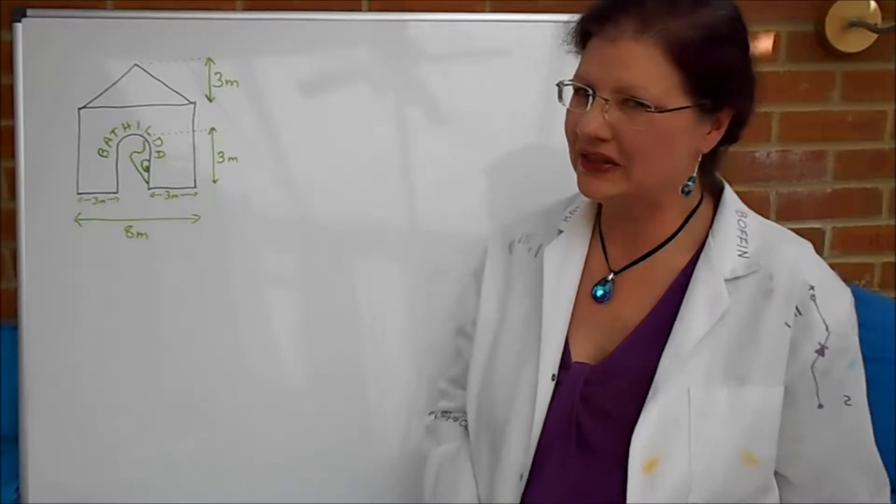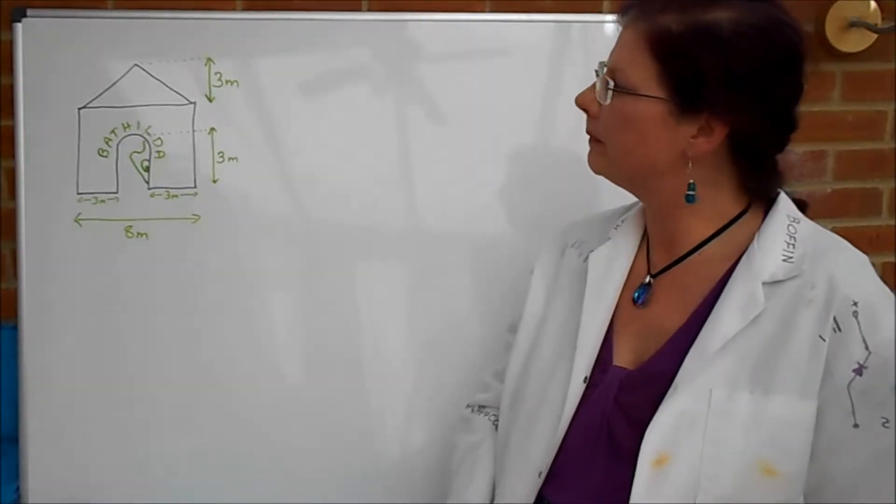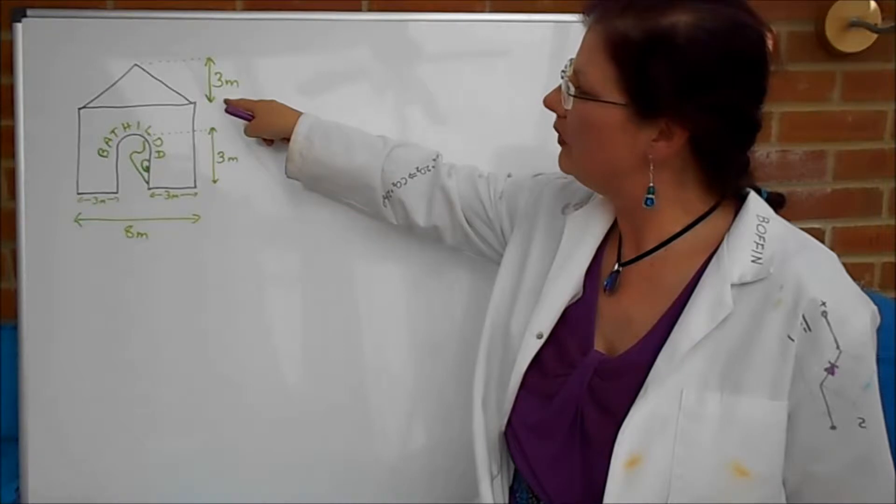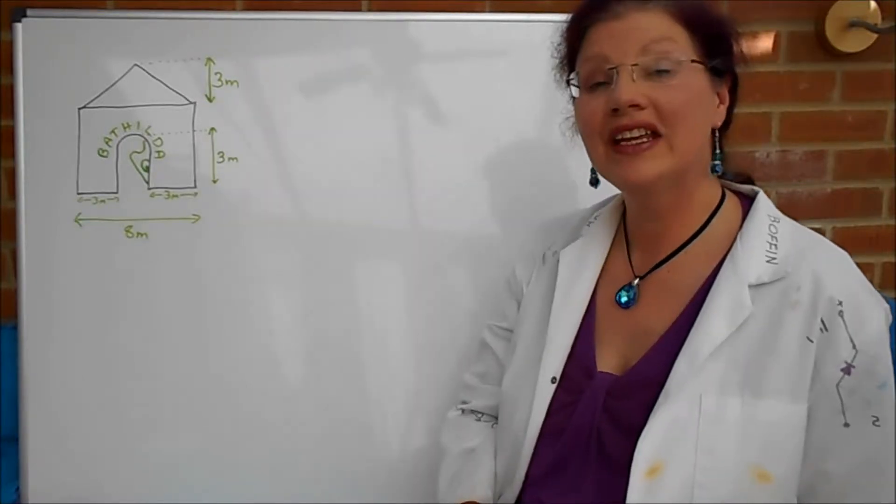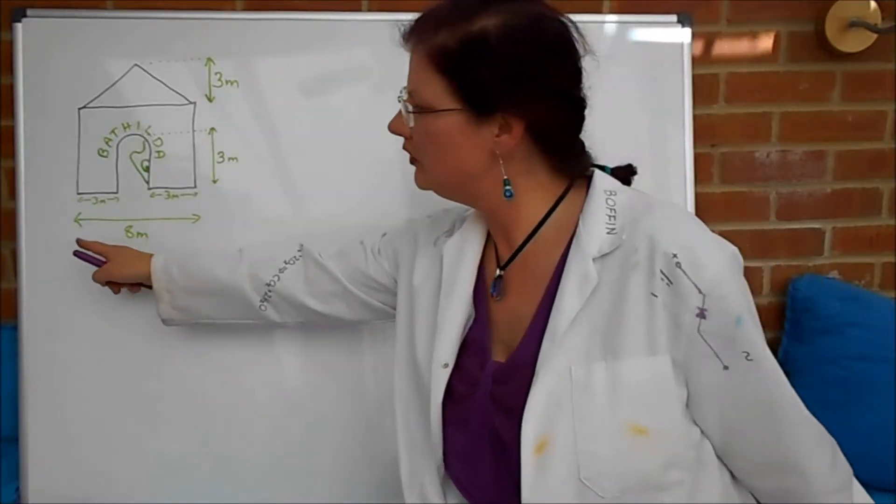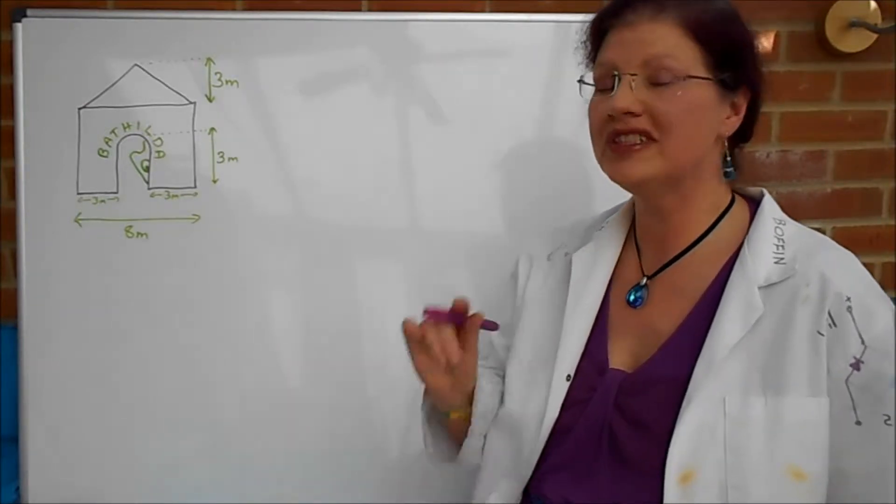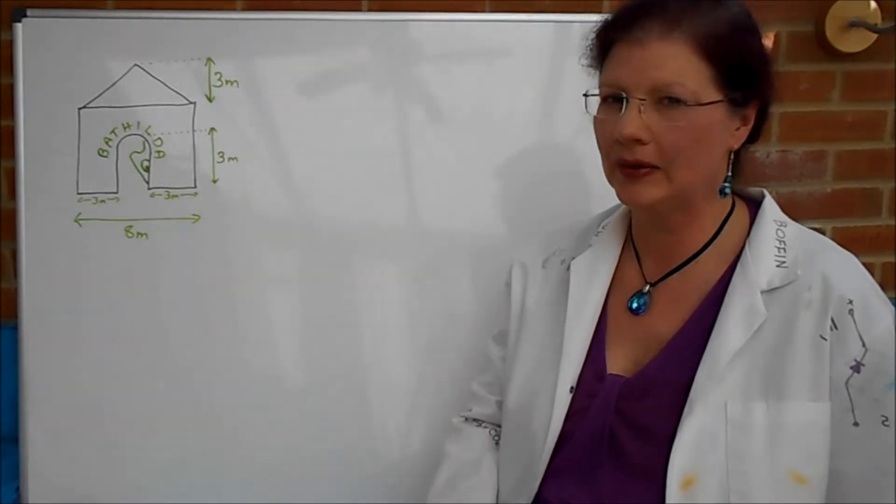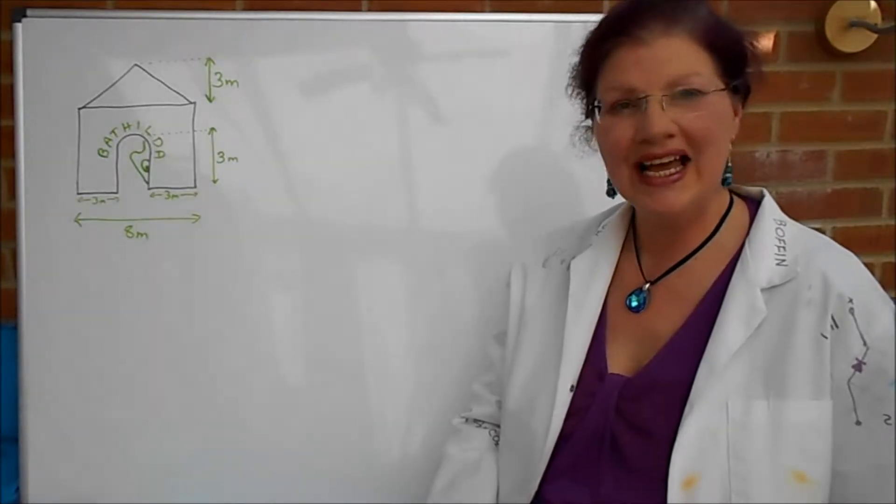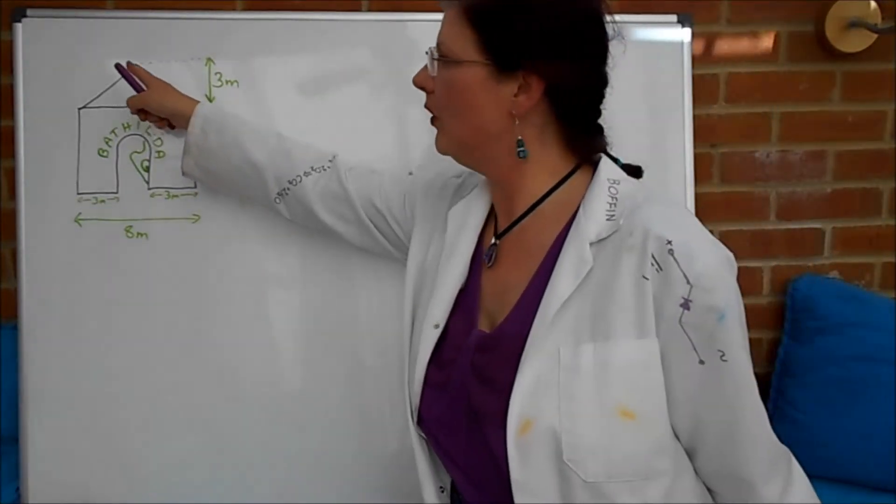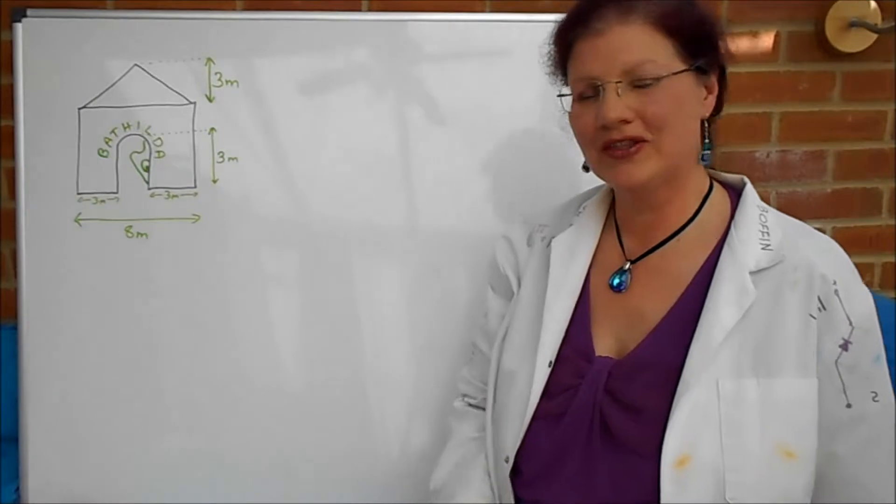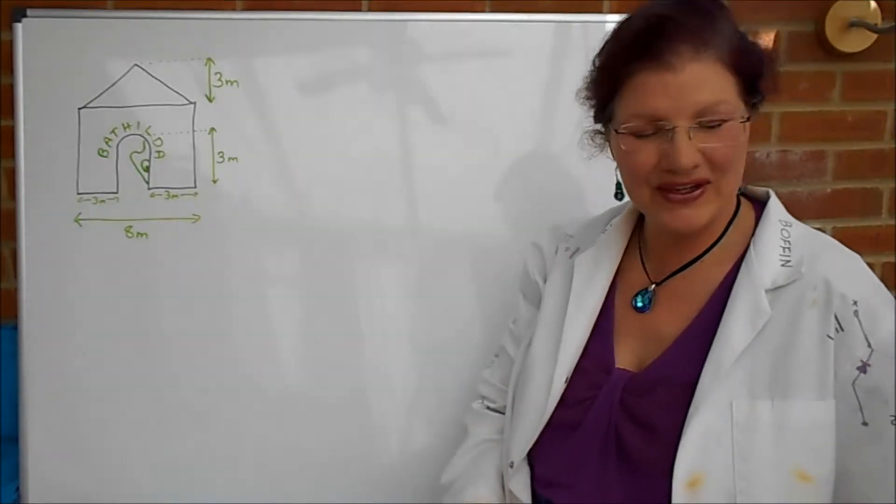Being a very mathematical cat of course she knows all the dimensions. She knows that the height from where the roof starts to the top of the roof is three meters. She knows that the total width of her house is eight meters and of course it's a perfectly symmetrical house. So for part A I'd like to know please how long is that slopey part of her house. So have a go at that one now.